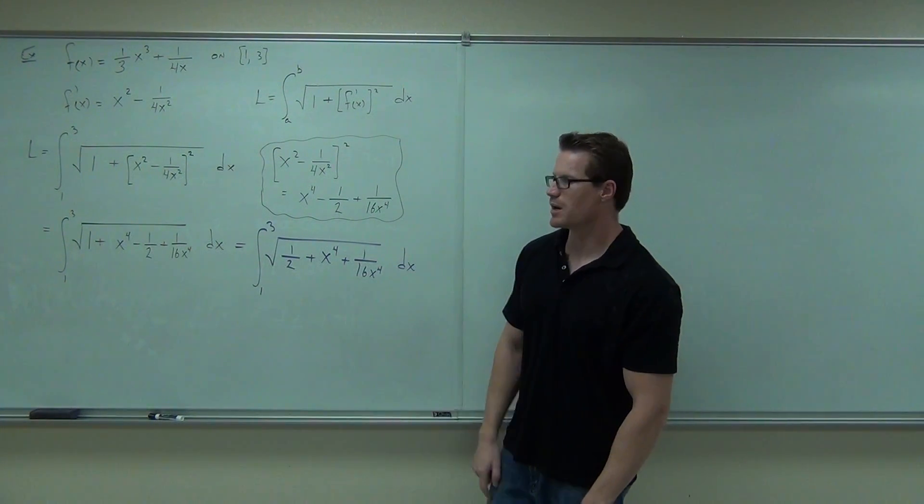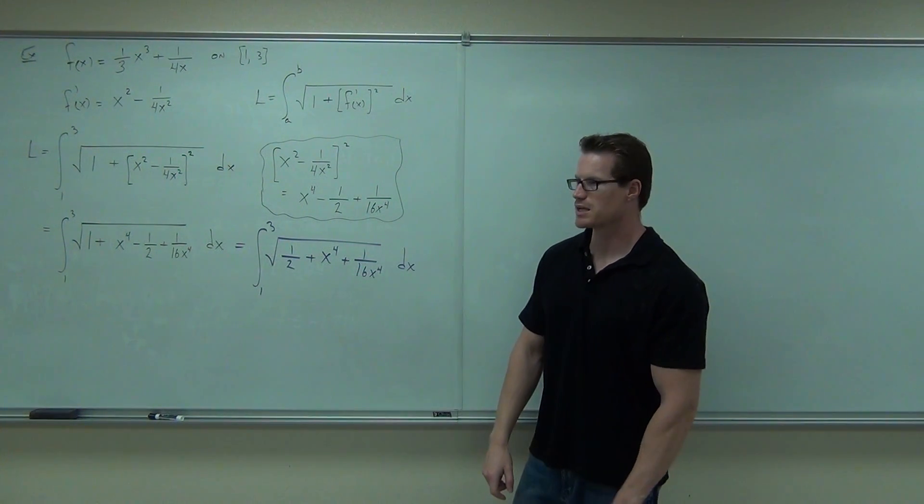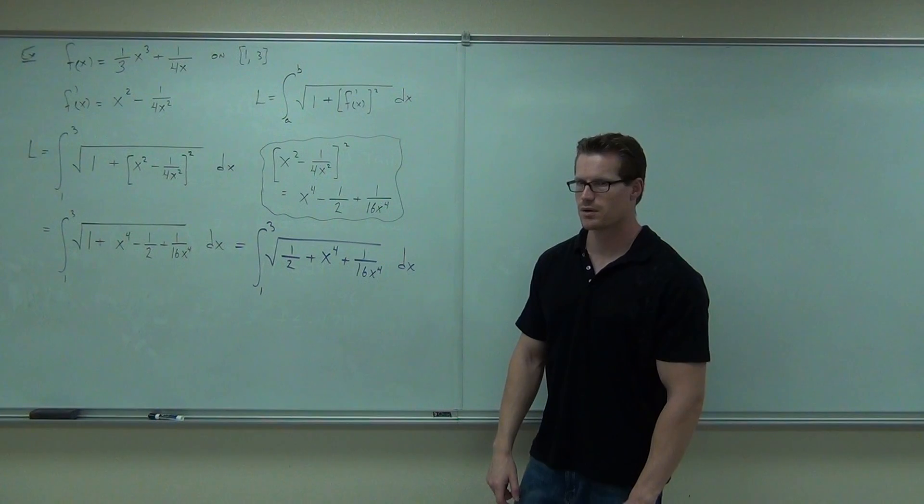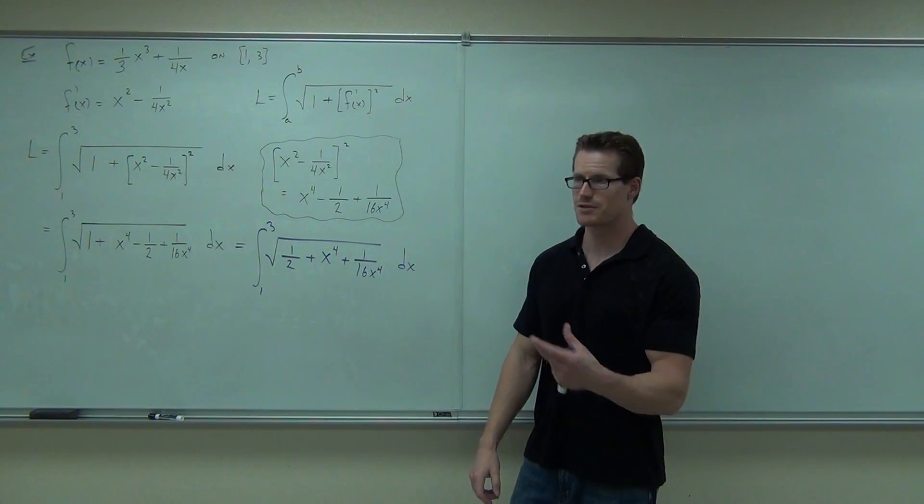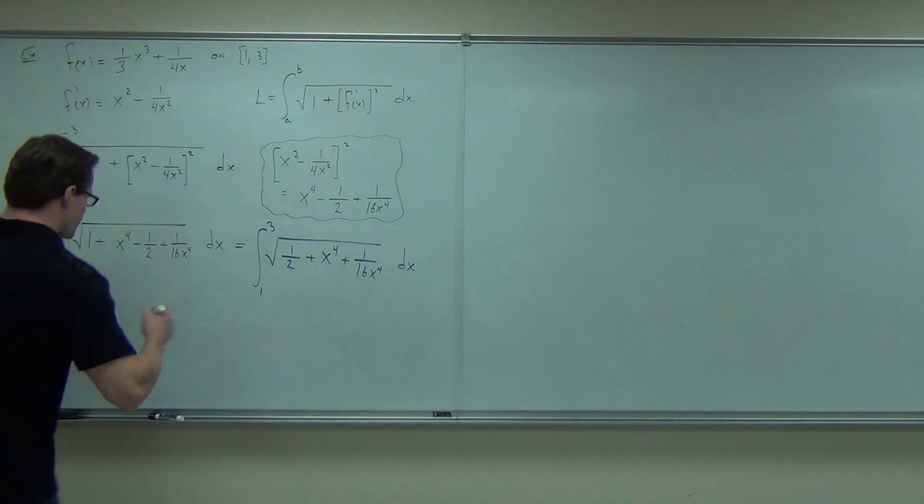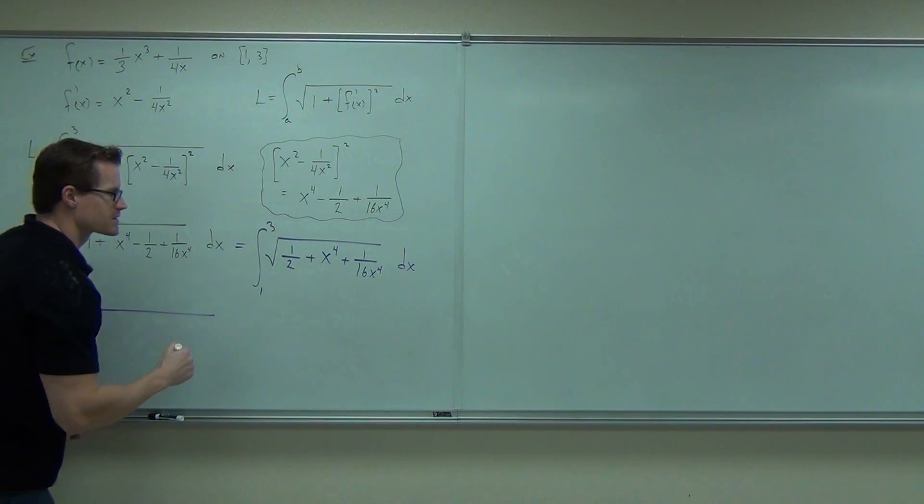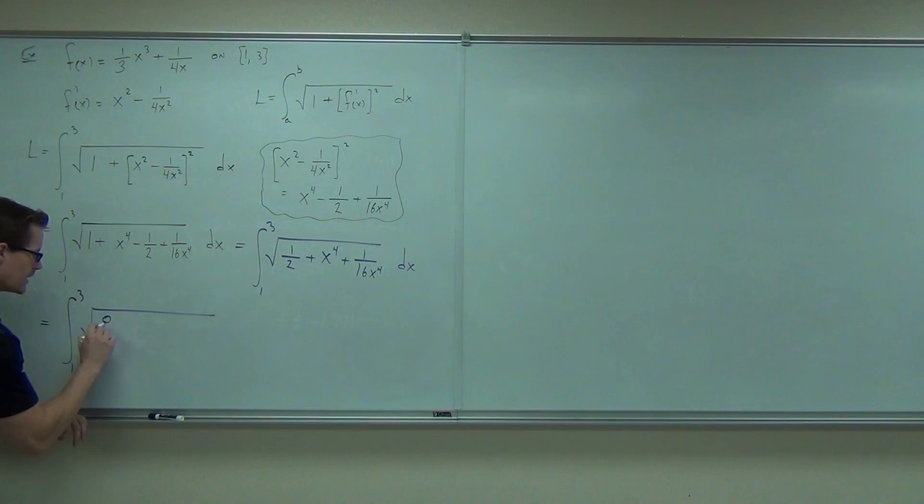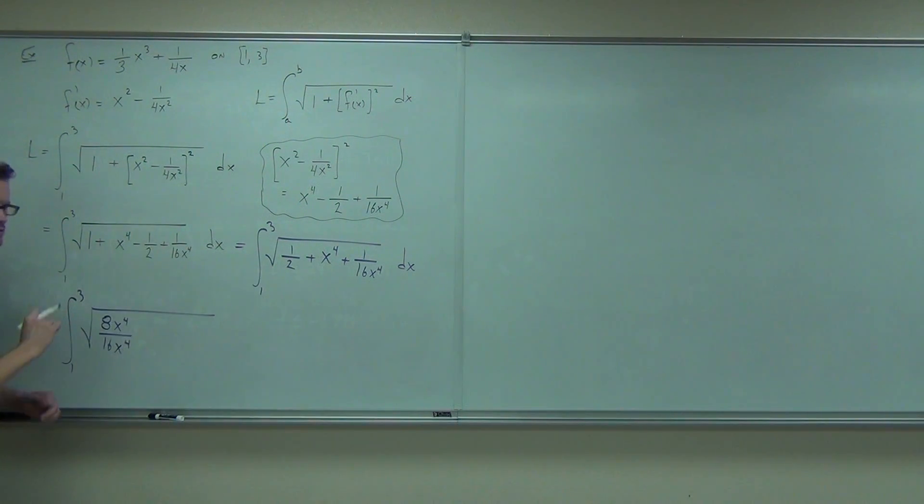So, let's find a common denominator. What is your common denominator between one half x to the fourth and one over 16x to the fourth? 16x to the fourth. Very good. So, we're going to go ahead and make all these fractions equivalent, but have the denominator of 16x to the fourth. What that means is we're going to get, let's go careful on this thing. One half is the same thing as 8x to the fourth over 16x to the fourth. One half is this. Do you believe me? I hope so. I'm the teacher. You shouldn't believe me.